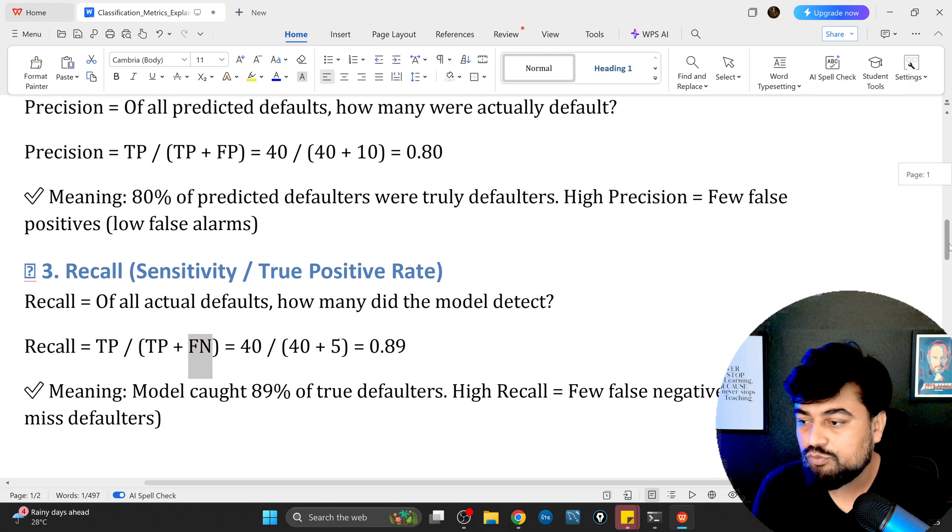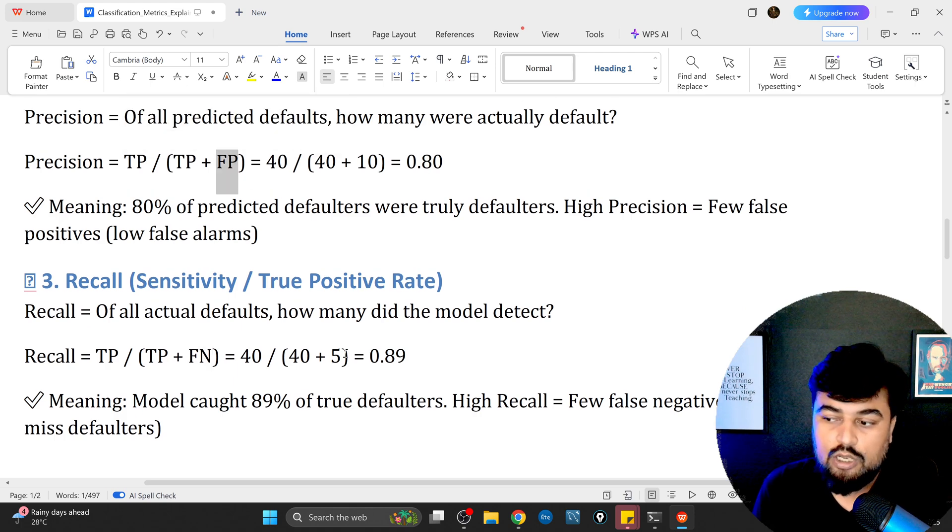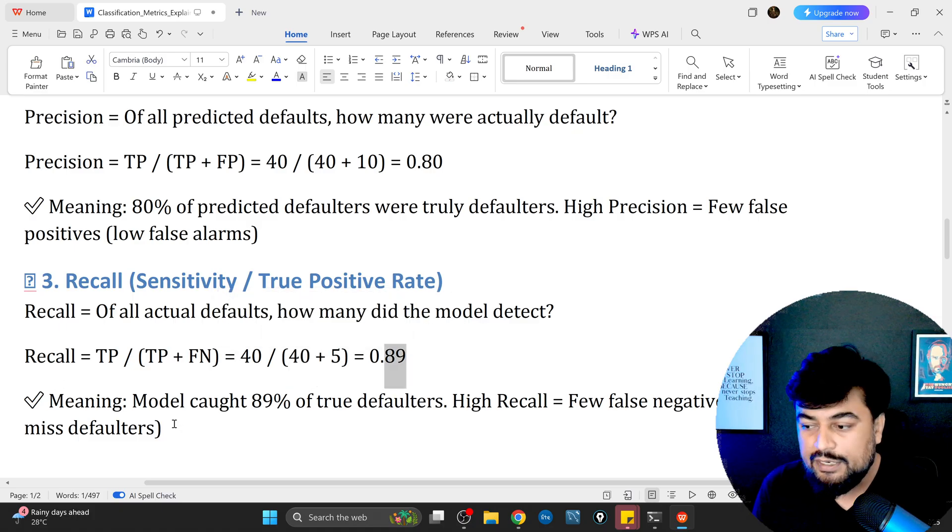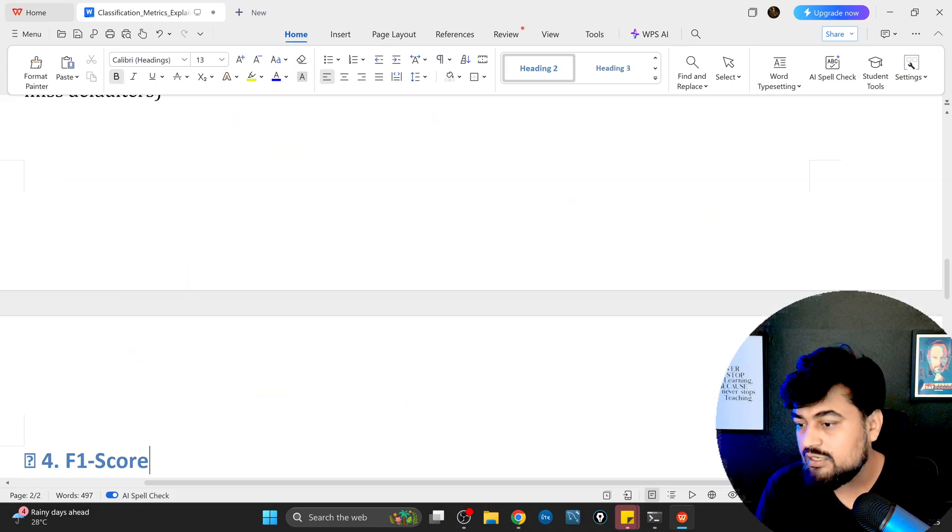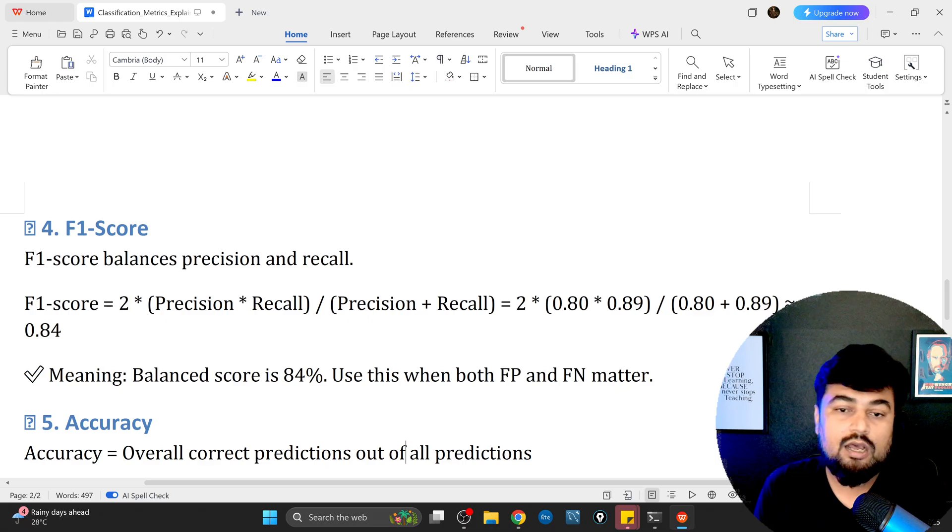In precision it was FP. Now it will be 40 plus 5 which is 89%. Meaning the model caught 89% of true defaulters, which is high recall. This is a good sign that your model was able to get good values and has more prediction power.